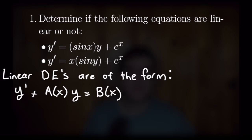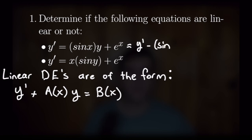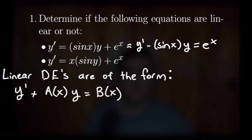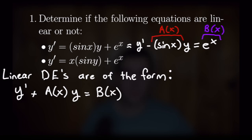Looking at the first equation, we can see right away that it is not in the proper form, as we have y prime all by itself on the left-hand side. It looks like on the right-hand side we might have just what we need to demonstrate that this equation is linear. So let's subtract that sine of x times y over to the left-hand side, giving us y prime minus sine of x times y is equal to e to the x. Now we can see this equation is in fact linear, where the role of a of x is played by negative sine x, and e to the x plays the role of b of x. So the first equation is linear.